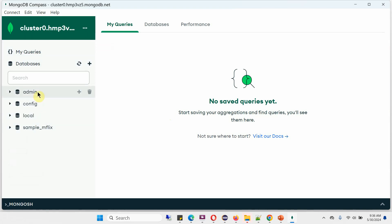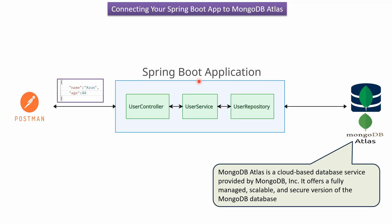Here you can see the databases. Here you can see the Spring Boot application. It has a user controller, user service, and user repository. User controller talks to user service, user service talks to user repository, and user repository will communicate to MongoDB Atlas.